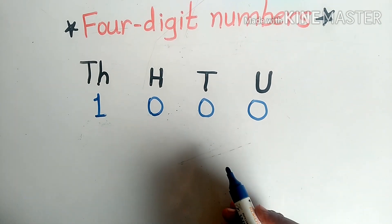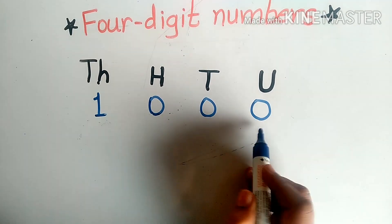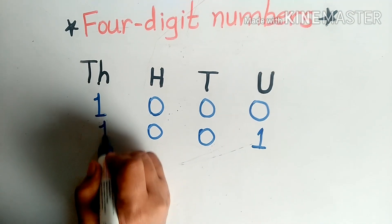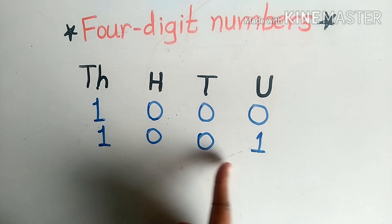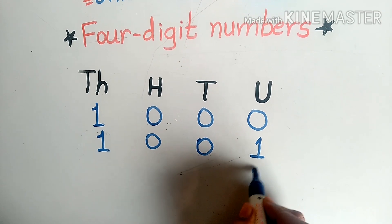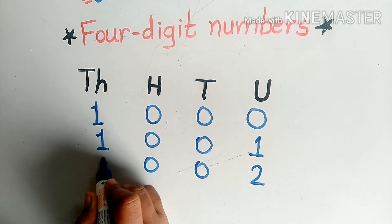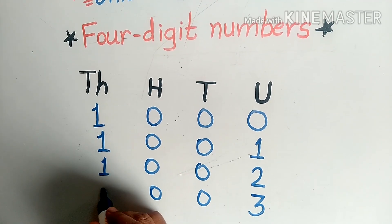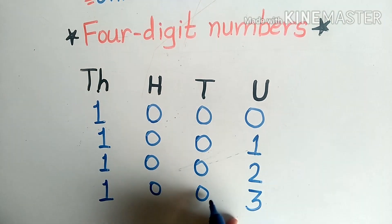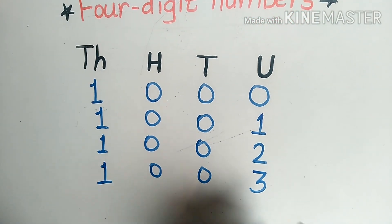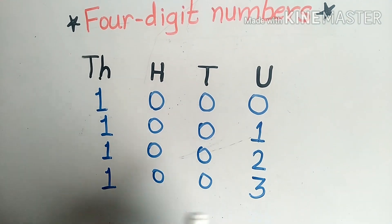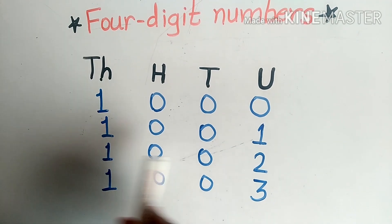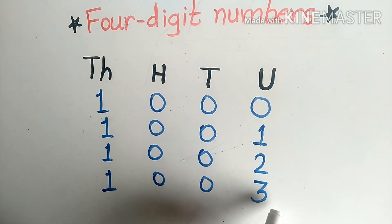What is the next number after 1000? Each time we add one more. If we add one more to 1000, the next number is 1001. Add one more and the next number is 1002, then 1003. In the tens, hundreds, and thousands places nothing changes — the change happens only in the units place. So the sequence is: 1000, then 1001, after that 1002, next number is 1003.